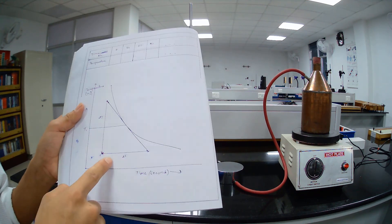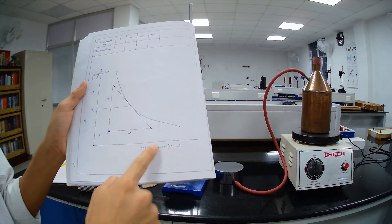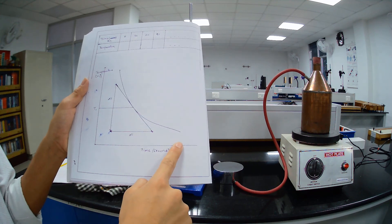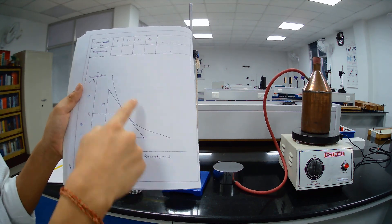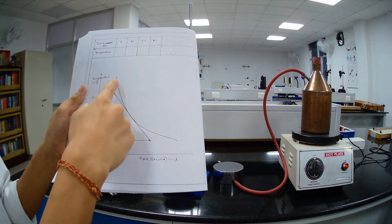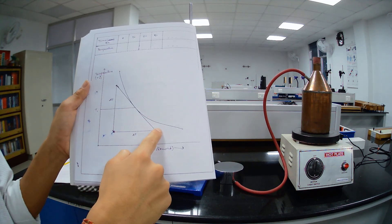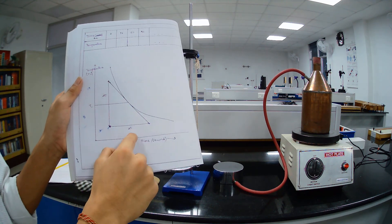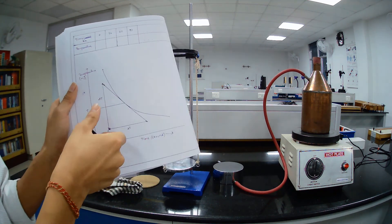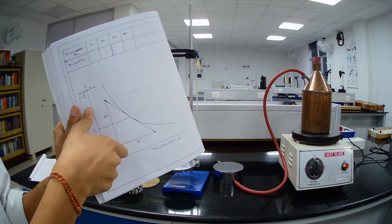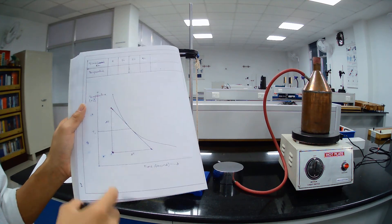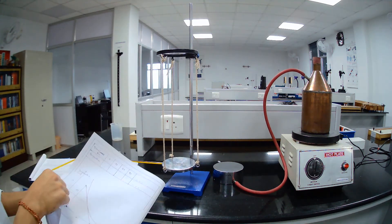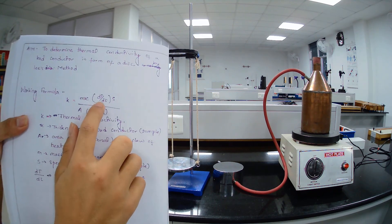From this table draw a graph and graph will be like this. This is temperature versus time and from this curve it will be like this. This curve will be like this and from this curve draw a tangent and find delta T. This is delta t small t and value of delta T capital T. From this we can find this one, dT/dt.